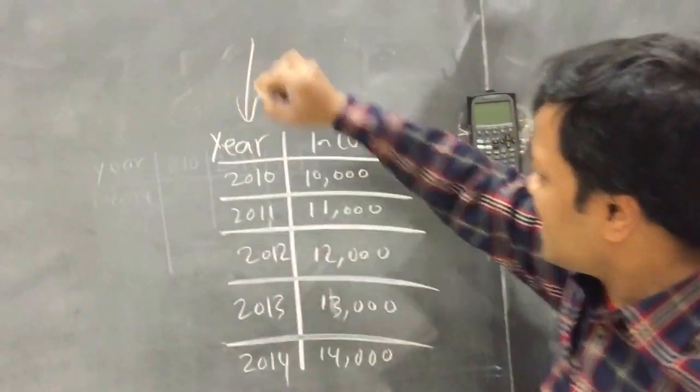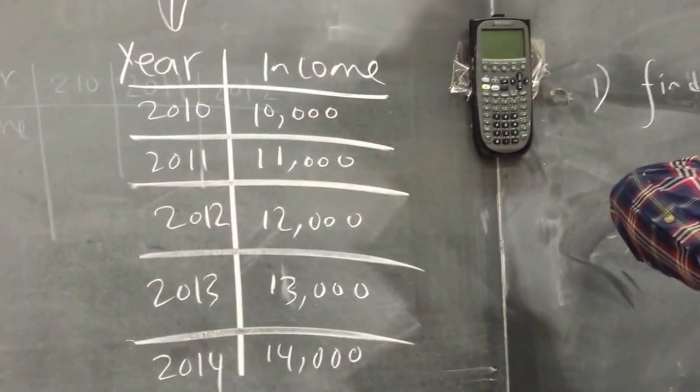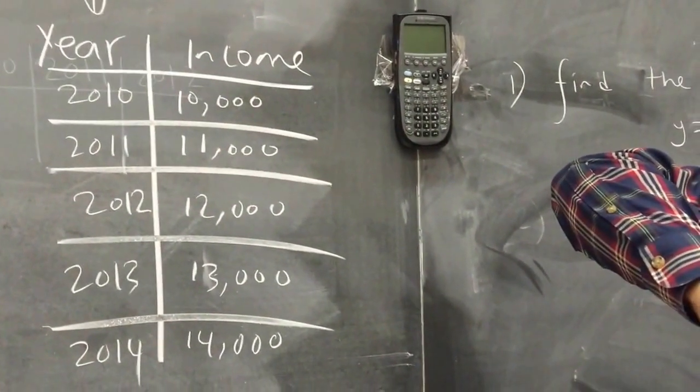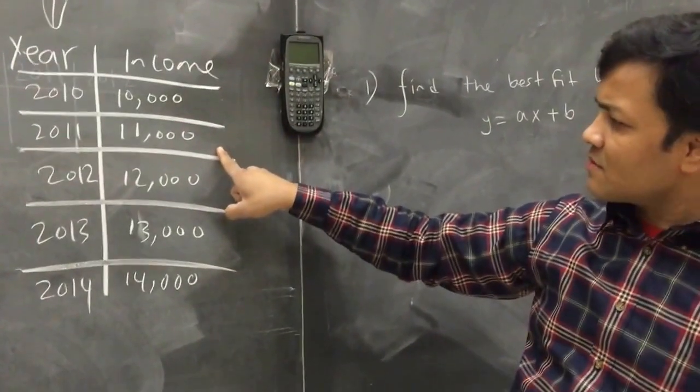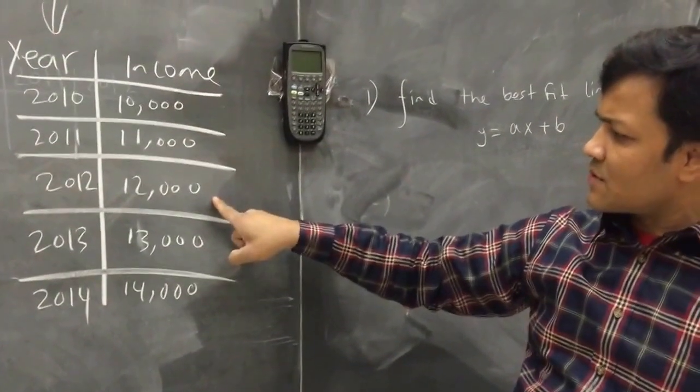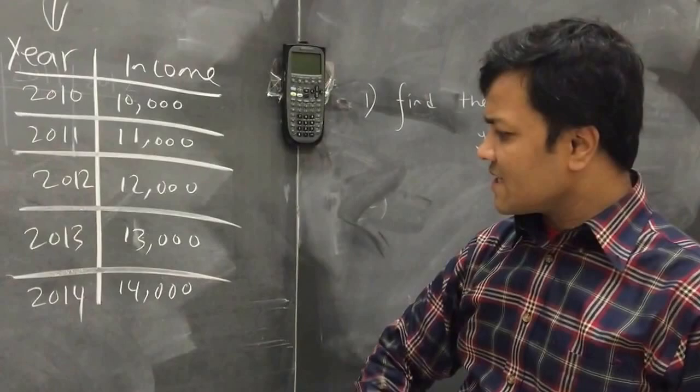this is yearly income, just an example. This is yearly income of a person who works at McDonald's. His income in 2010 was $10,000, 2011 $11,000, 2012 he earned $12,000, 2013 he earned $13,000, 2014 he earned $14,000.